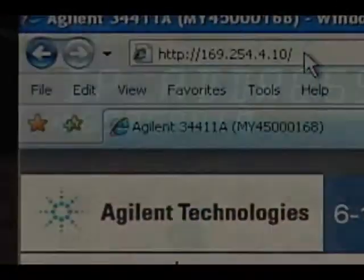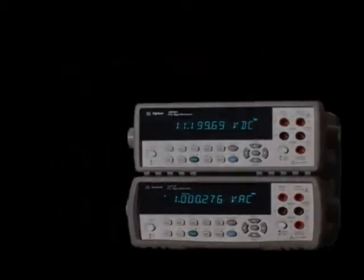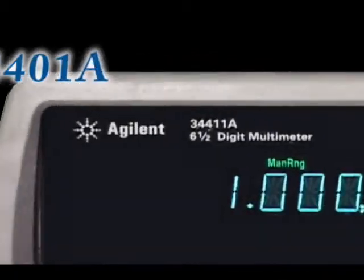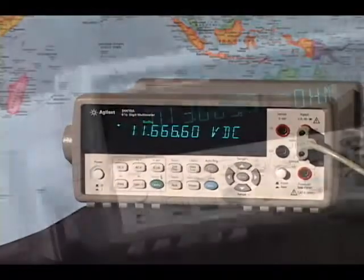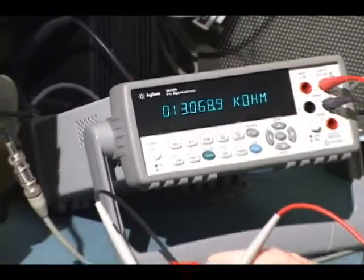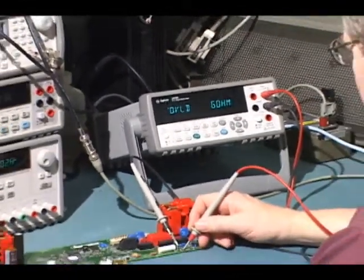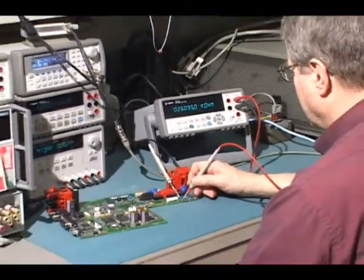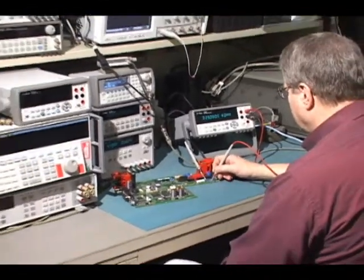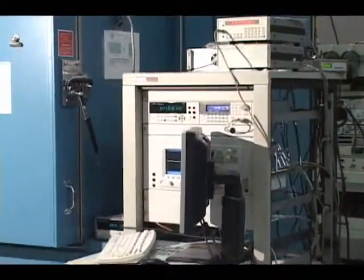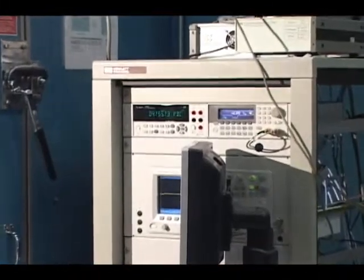The 34410A represents the next generation of 6.5-digit multimeters from Agilent Technologies. It follows in the footsteps of the industry standard 34401A DMM. Equally adept on a bench or in a system, the 34410A offers increased functionality and accuracy for bench applications and unprecedented measurement speed and connectivity in test systems.